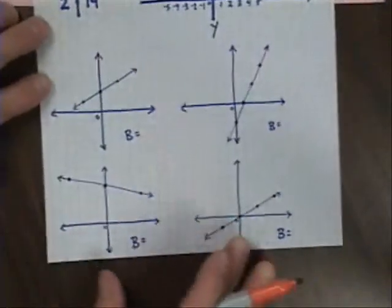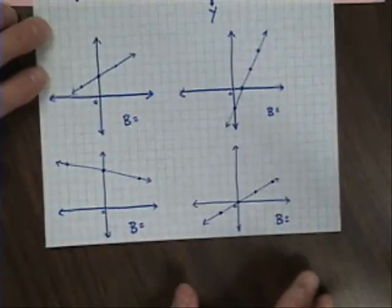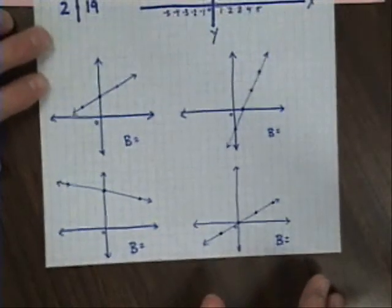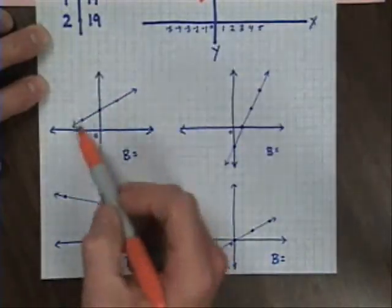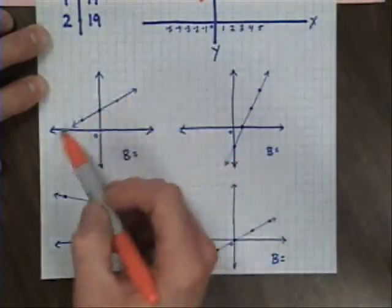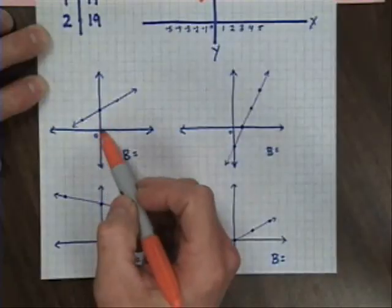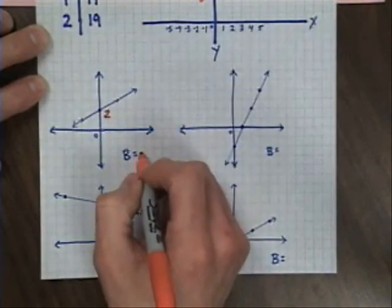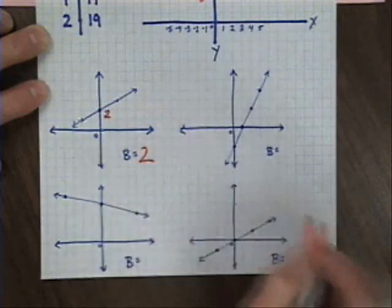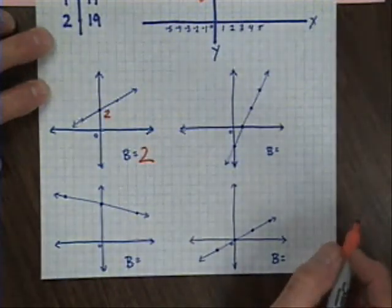To try to show this more clearly, take a look quickly at four different examples. In the first one I have my x-axis and my y-axis, my linear function has been graphed, and it looks like it hits at two spaces above the origin, so b or my y-intercept is simply 2. That's all there is to it.